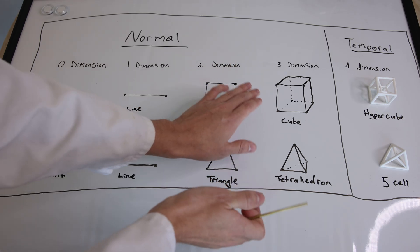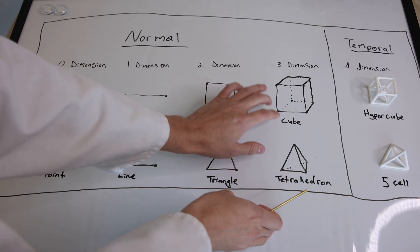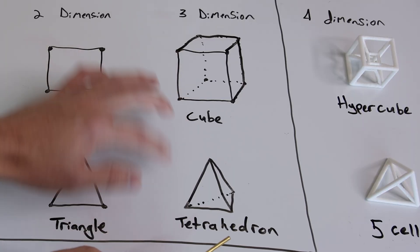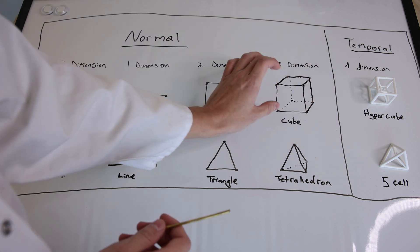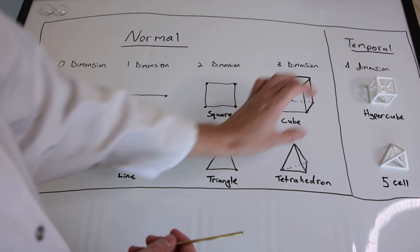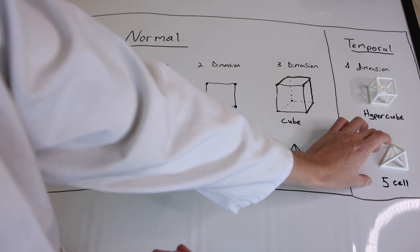In three dimensions, which is where we exist, we have the cube and the tetrahedron with x, y, and z-axis. In four dimensions, a cube becomes a hypercube and the tetrahedron becomes the five-cell or the simplex.